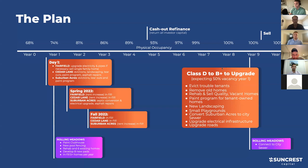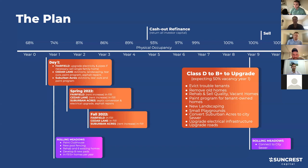We'll also do a paint program - for residents who own their home but haven't taken care of it, we provide labor and paint and give them a four-year option to pay back that upgrade of their exterior. That gives them some skin in the game and gives the whole neighborhood a nice appearance. We'll also add new landscaping and small playgrounds - which surprisingly don't really impact our insurance costs.